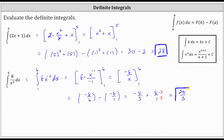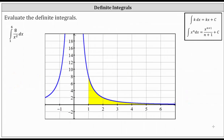Before we go, let's look at the graph of the integrand function over the closed interval from one to six. Once again, notice how the area bounded by the function and the x-axis over the closed interval from one to six is all above the x-axis. Therefore the value of the definite integral, which is 20 thirds, is equal to this yellow area. I hope you found this helpful.